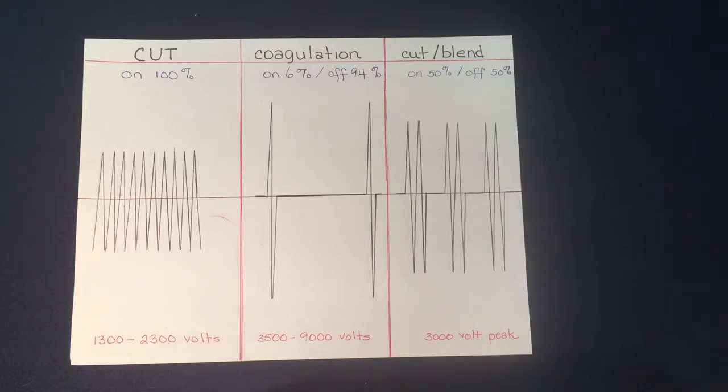On the left-hand side here we see the cut. When the cut is on, it's going to be on 100% of the time and that's why you see those spikes. The voltage is going to be 1300 to 2300 volts, and because it's constant, that heat is constantly being applied. It's going to vaporize the cell and the heat is dissipated in the vaporization of the cell.